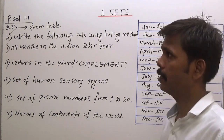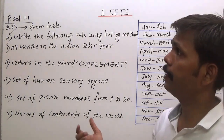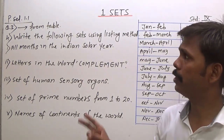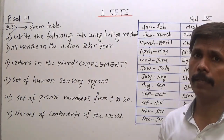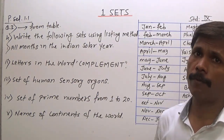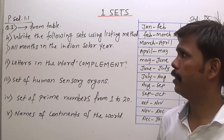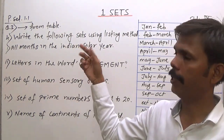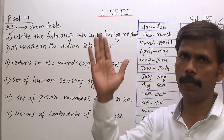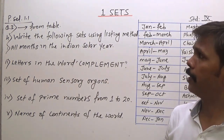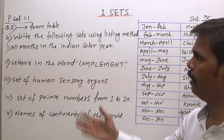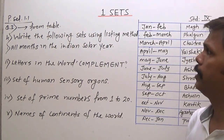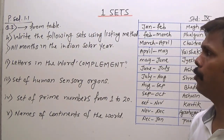Friends, we have seen question number 3: write two sets in listing method as well as in set-builder form (rule method). A table was made at the start showing both methods. You can write two examples of your own. You can refer to the table if you don't know.